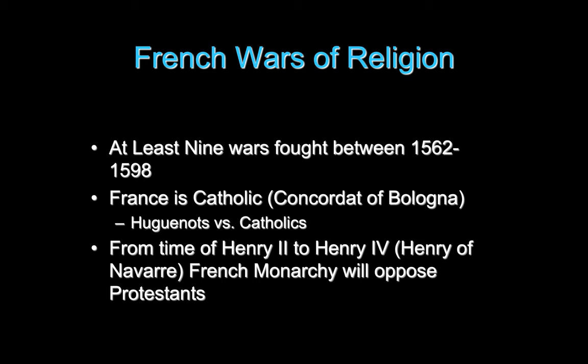The two main monarchs we need to know in these Wars of Religion are Henry II, who is part of the Valois family, and Henry IV, or Henry of Navarre, who is going to start the Bourbon line. Make sure we highlight those two names — they are the two most important figures from the French Wars of Religion, especially regarding the monarchy. With Henry II and his family, we're going to see the French monarchy mount an opposition to Protestants, but then kind of lose control of the situation.